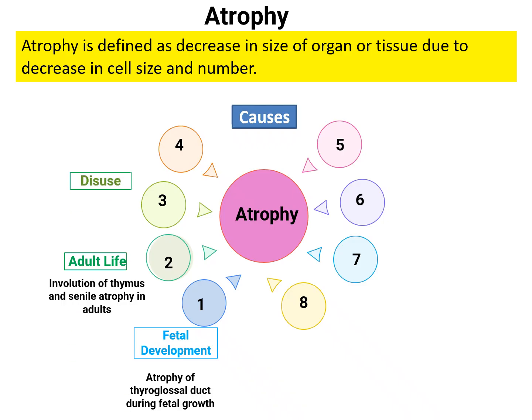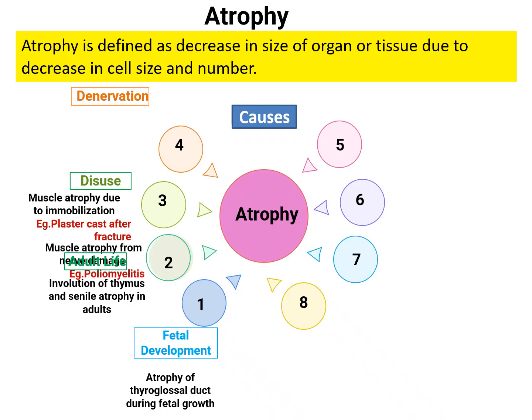The best example of disuse atrophy is immobilization in a plaster cast after fracture. If the cast is worn for a long period with no mobilization of that limb, the muscle undergoes atrophy. Another example is denervation atrophy, where there is loss of nerve supply. In poliomyelitis, the poliovirus damages nerves, and without nerve stimulation, there is muscle atrophy.